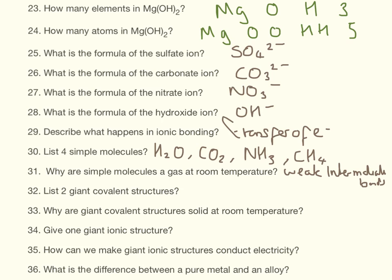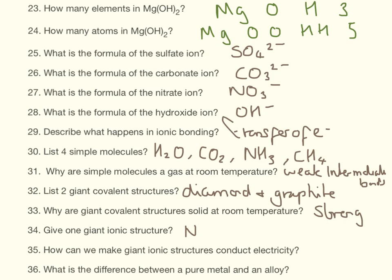These two giant covalent structures are both made from carbon, so they are diamond and graphite. Why are they solid at room temperature? Because they have strong bonds which take a lot of energy to break. Give one giant ionic structure: sodium chloride. You can have any salt — anything with a metal and non-metal — but sodium chloride is the most commonly used.